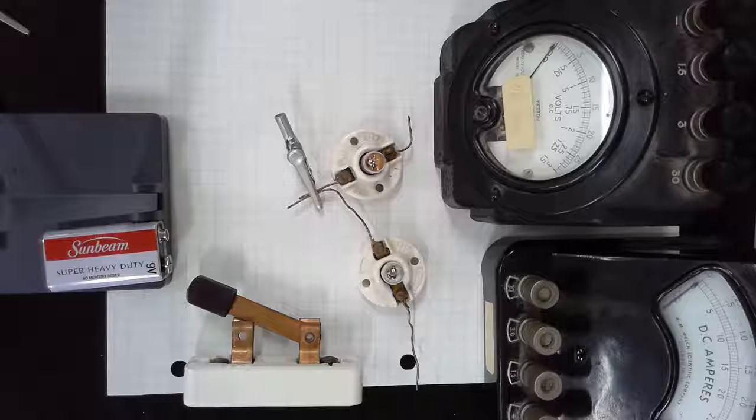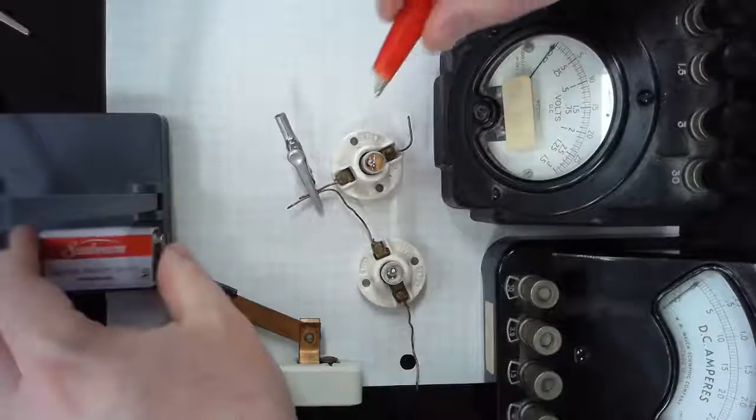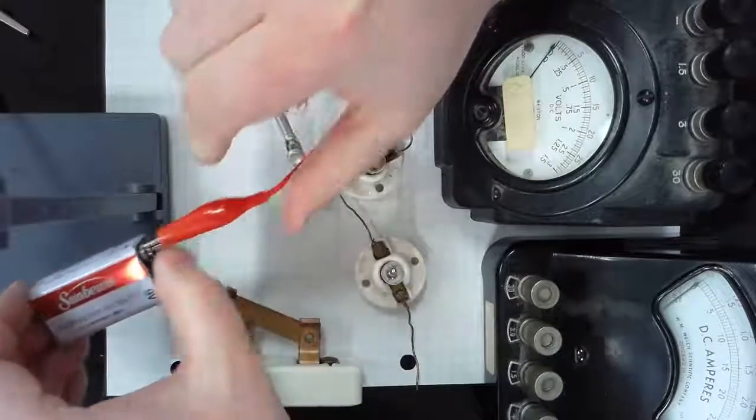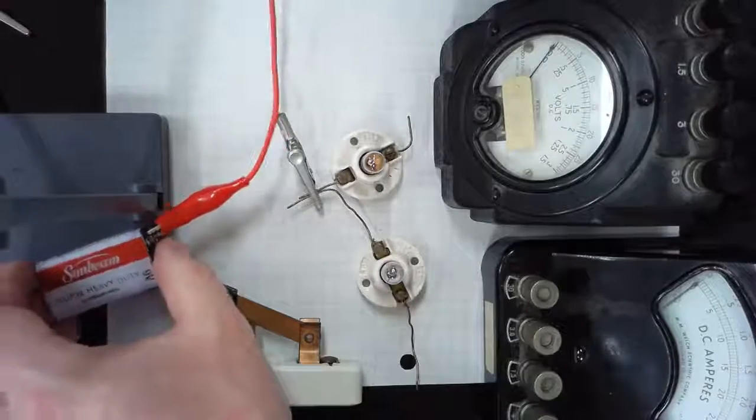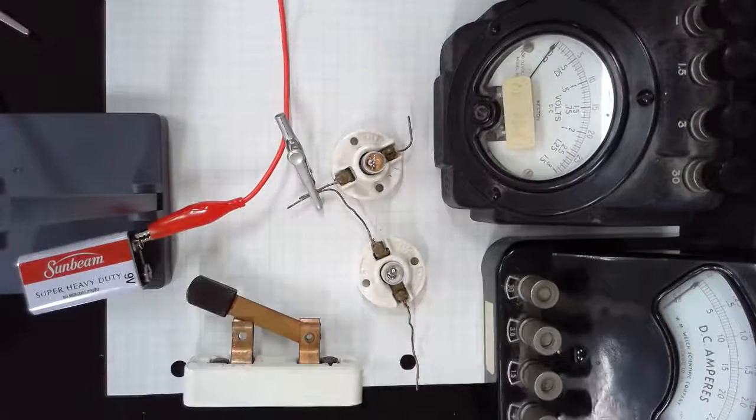We're going to start on the positive side of the battery. Usually red is what we use to code for positive. You're going to see this makes a rat's nest of wires, so having color codes is super important.